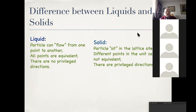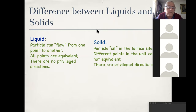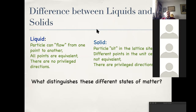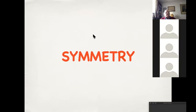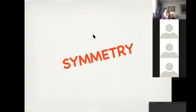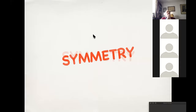So we have those three differences. Let's now ask what is the main reason for those differences — what physical property is actually responsible for the differences between liquids and solids. The answer is that there is one property, and that is a property which we call symmetry.